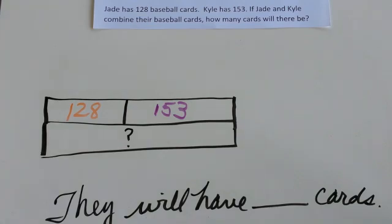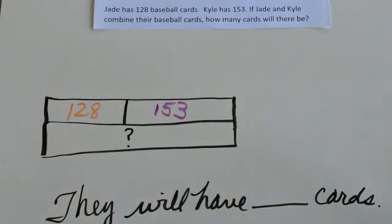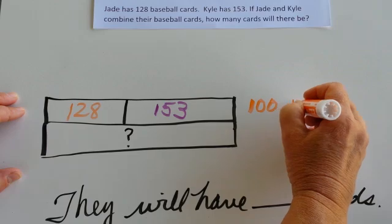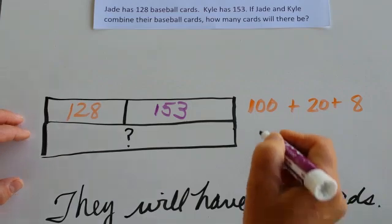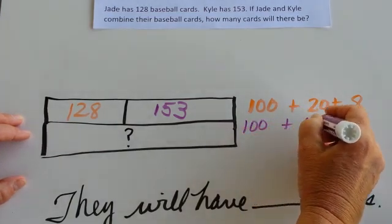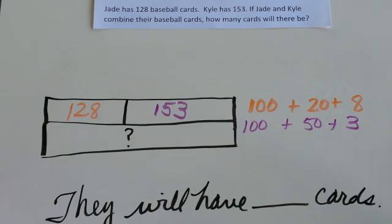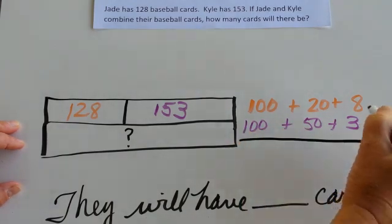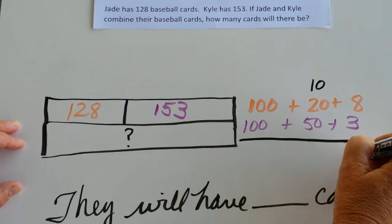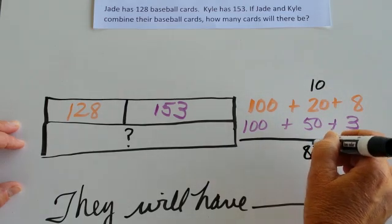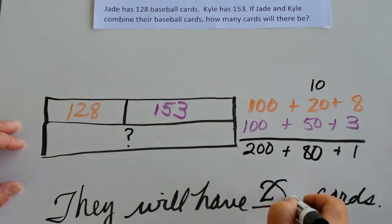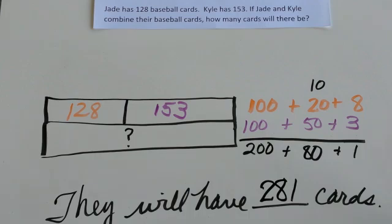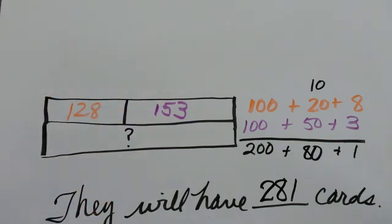The next step is to compute the problem. You're welcome to compute it any way you like. Today I'm going to use expanded form. Jade has 128 cards and Kyle has 153 cards. When I add those together, I know that 8 plus 3 equals 11. 11 can be represented as 10 and a 1. 50 plus 20 plus 10 equals 80. 100 plus 100 is 200. I can quickly see that they will have 281 cards all together. See how nicely the model drawing helped us organize that information.